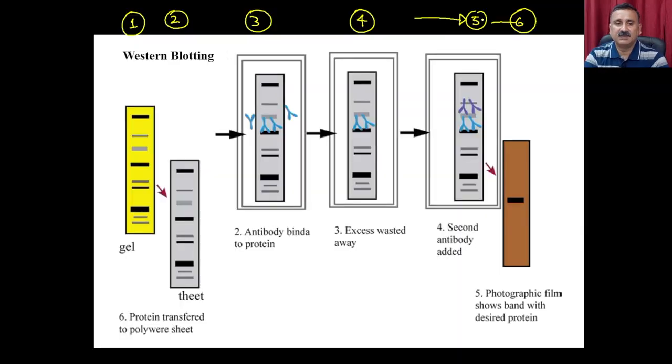In this video, we demonstrated how to transfer proteins to a blot and what precautions need to be taken while doing the western blot. We also showed how to develop the blot and explained the underlying principle of blot development. The students discussed all these steps: how to transfer proteins onto the membrane, how to perform the primary antibody treatment, how to perform the washing, and what precautions to take during western blotting.